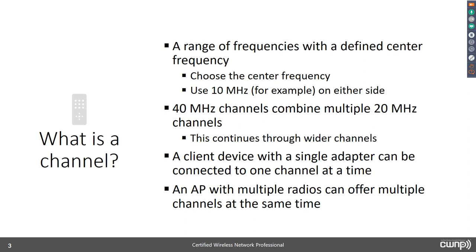An 802.11n client using the exact same application and sending the same packets across the network will get them across the wireless channel faster than an 802.11a client, because it can achieve higher data rates. Of course all things being equal — the 11n client may be far away and the 11a client closer, giving the 11a a higher data rate in that case. The key point is that even with a wider channel, there could still be devices requiring a narrower channel. This continues to be true for 80 MHz channels in 802.11ac.